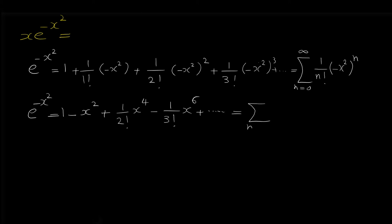In sigma form, the alternating sign can be written as negative 1 to the power of n, over n factorial times x to the power of 2n.